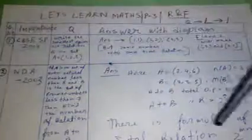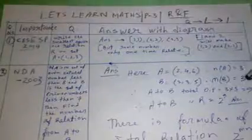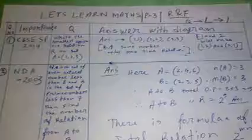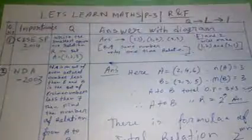And the total number of relations will be 2 to the power n, because we know there is a formula of total relations. If there are two sets and their relation, and there will be m elements in set B and n elements in set A, then you have to take the multiplication of that and make it power of 2. So the relation total relation will be 2 to the power m×n. By this formula you can calculate this type of questions.